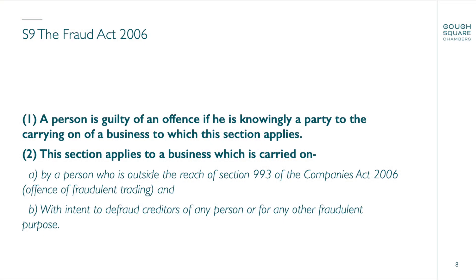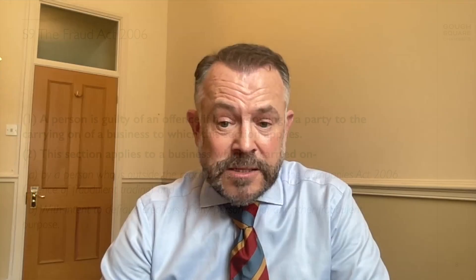The Fraud Act 2006 — same year — legislators clearly had exactly the same thing in mind because the wording is almost identical. The person is guilty of an offence if he is knowingly a party to the carrying on of the business to which this section applies. This section applies to a business which is carried on by a person outside the reach of Section 993 of the Companies Act 2006, and with intent to defraud creditors of any person or for any other fraudulent purpose.